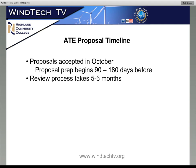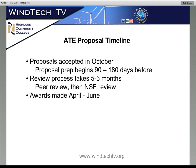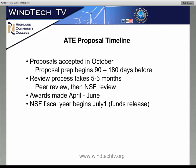The review process takes about five to six months. You submit in October, peer review happens in December, those recommendations are passed to the program officers at the National Science Foundation, and they review them. Typically awards are announced in the March–April timeframe. You have peer review, then NSF review, and awards are made April through June.